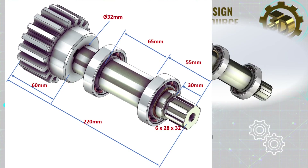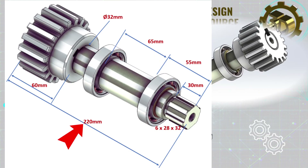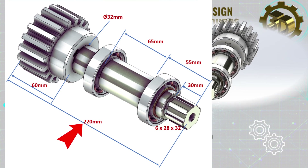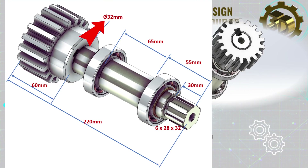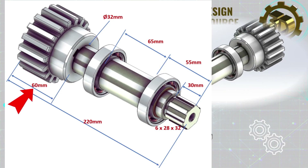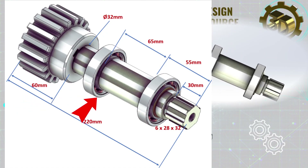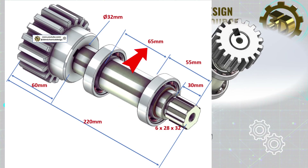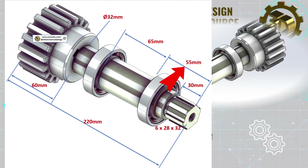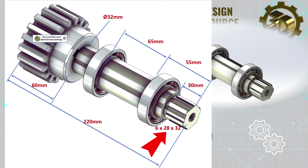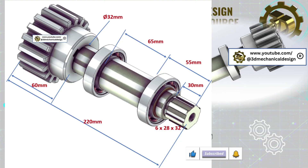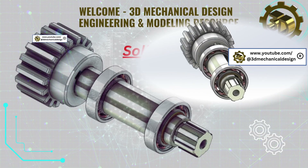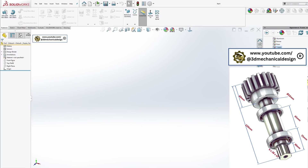Overview: We'll design a shaft that is 220 mm long with specific features. A gear is positioned on one side, with an internal diameter of 32 mm and a hub diameter of 60 mm. Two ball bearings are placed in the middle, spaced at 65 mm and 55 mm from the edges. On the opposite side, a spline connection measuring 6 by 28 by 32 and 30 mm long. Additional features include threaded holes, retaining rings, chamfers, and radii. You can download the 3D model using the link in the description.